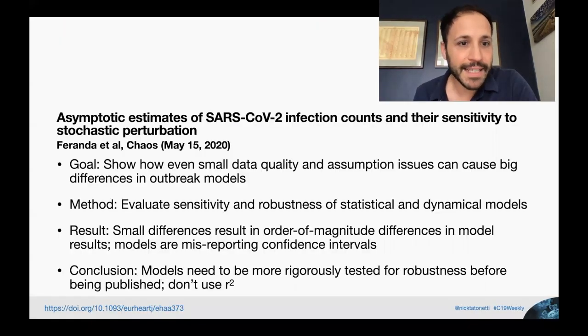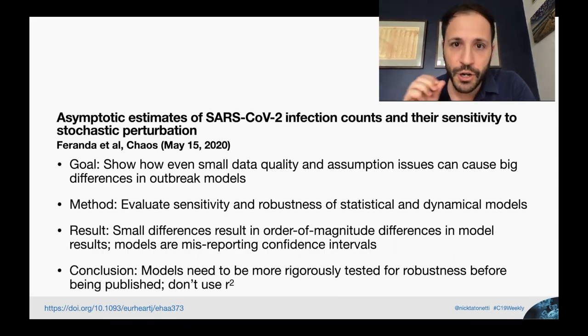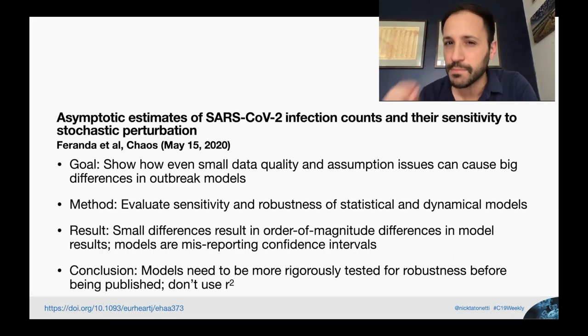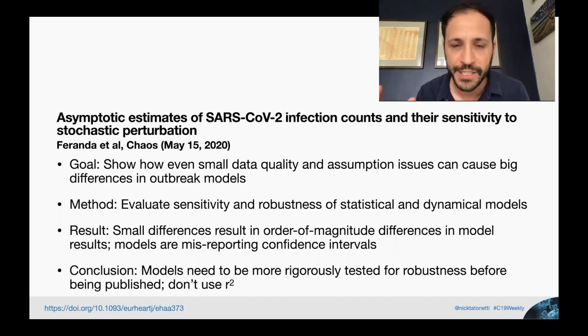First, let's talk about chaos theory. The paper is about asymptotic estimates of SARS-CoV-2 infection counts and their sensitivities to stochastic perturbation. The goal was to show how even small data quality issues or small assumption issues in models can cause huge changes.